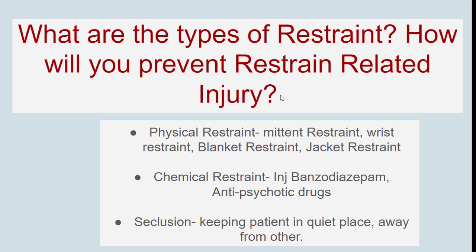What are the types of restraint? How will you prevent restraint-related injury? There are three types of restraint: physical restraint, chemical restraint, and seclusion. Examples of physical restraint include mitten restraint, wrist restraint, blanket restraint, or jacket restraint. Chemical restraint includes injection benzodiazepine or any antipsychotic drugs. Seclusion means keeping the patient in a quiet place away from others.